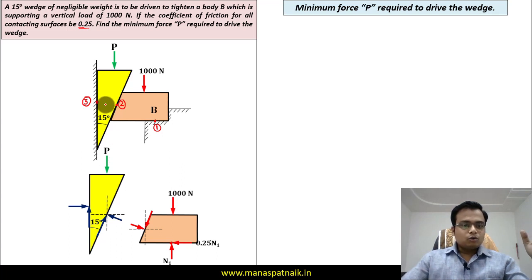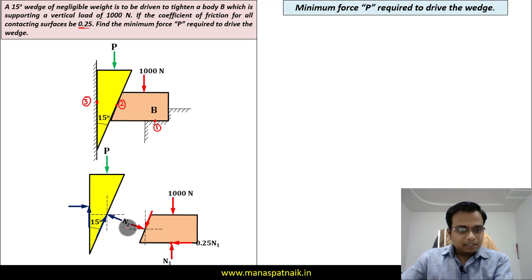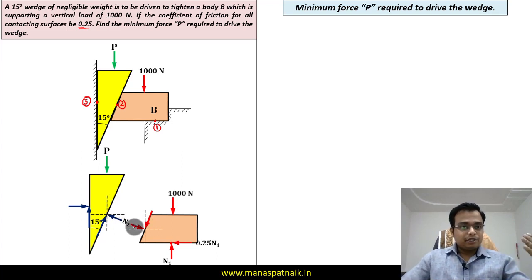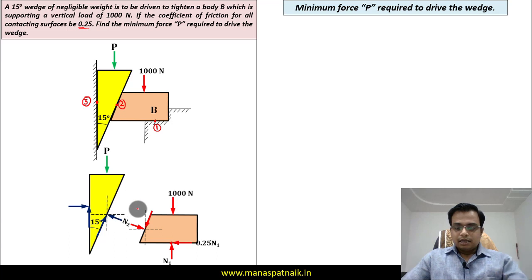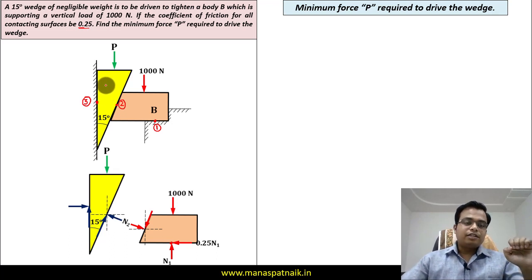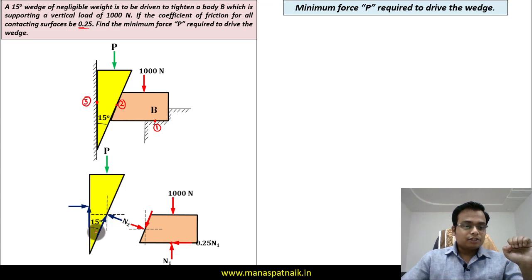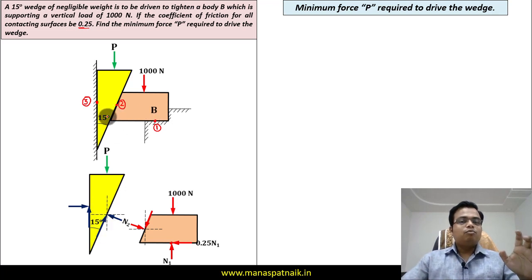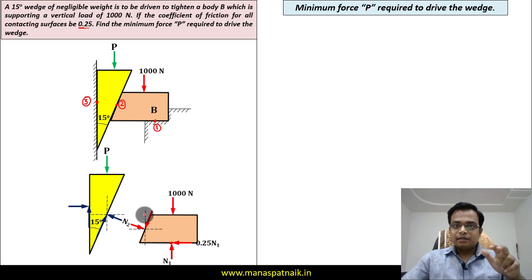Block B is in contact with the wedge, so the wedge offers a normal N2 to block B. By Newton's third law, there is a reaction N2 from the 1000 Newton block onto the wedge — same magnitude, opposite direction. Since the wedge tries to move downward, block B offers friction in the upward direction onto the wedge. The action-reaction pair for friction is also μN2, that is 0.25N2, at this interface.